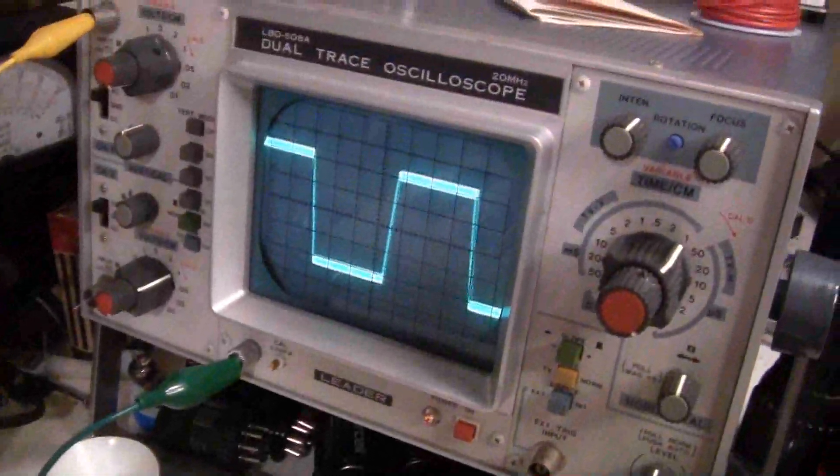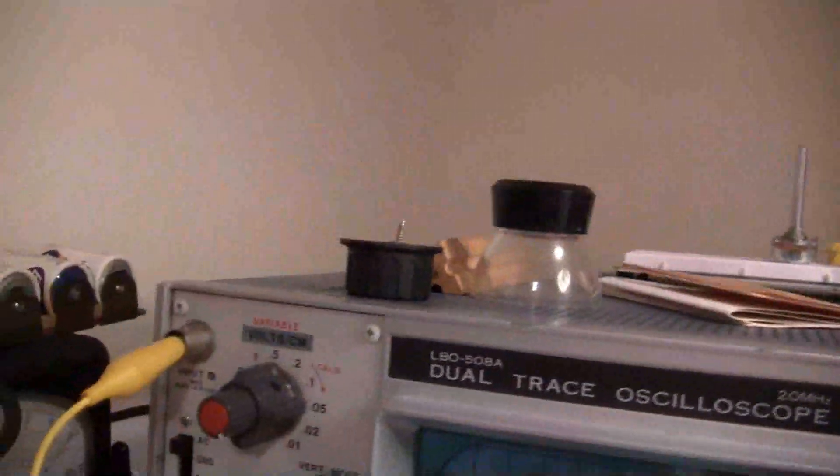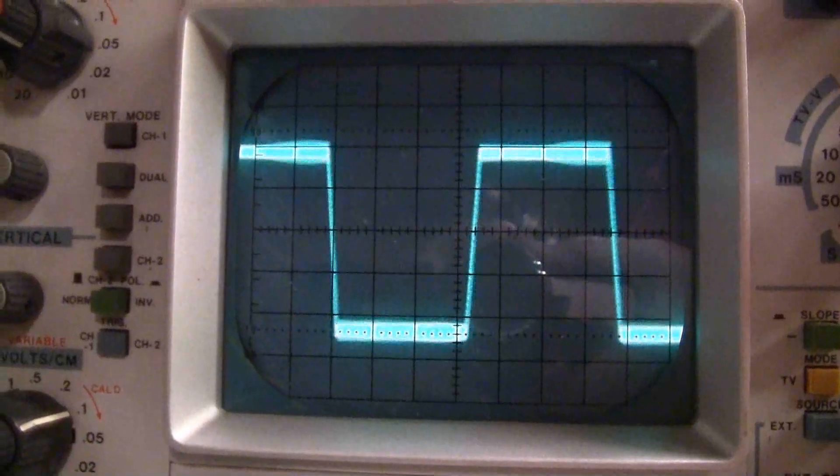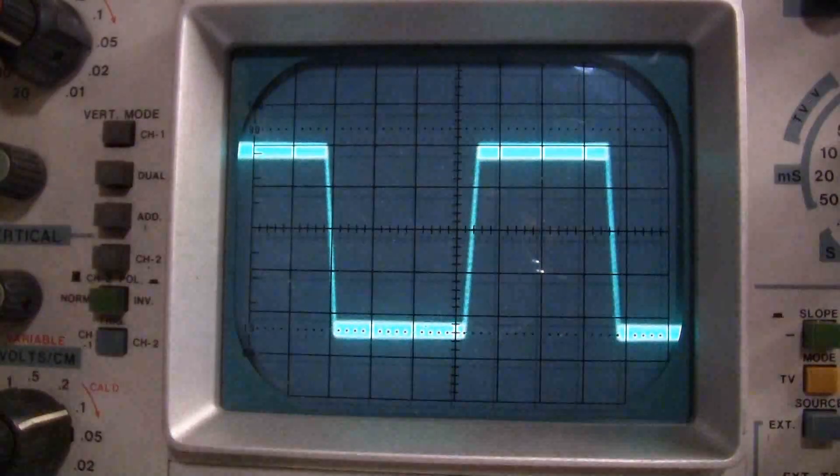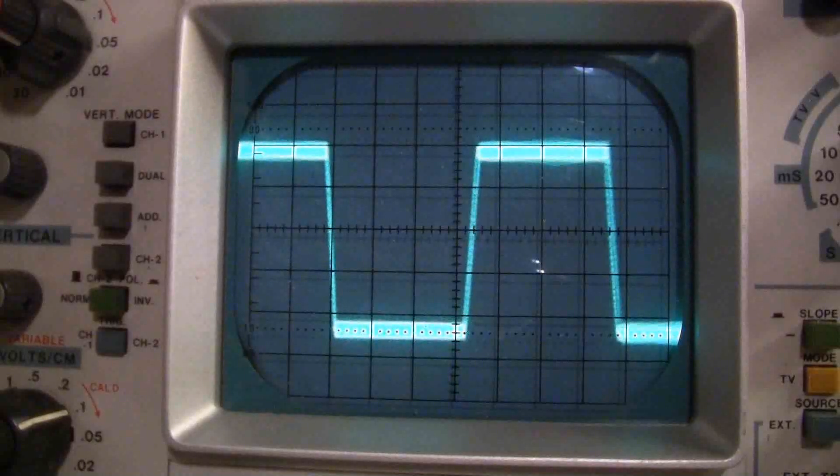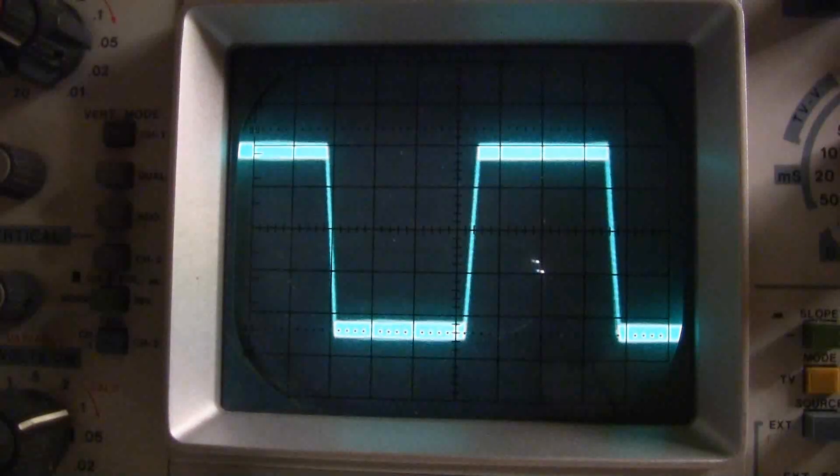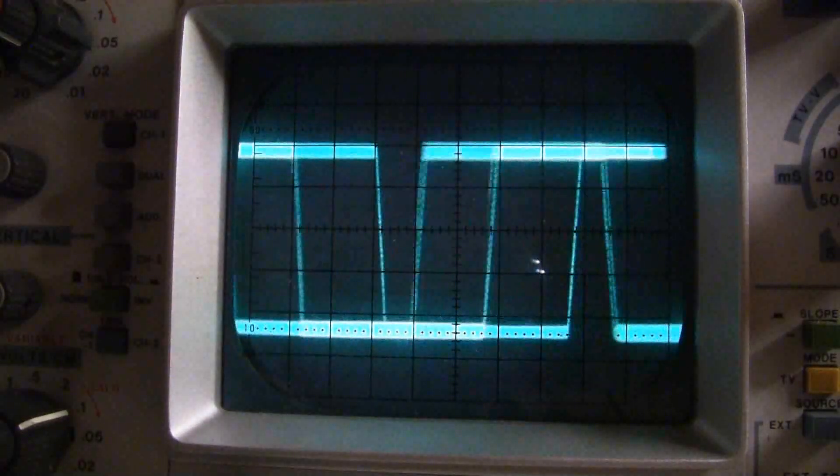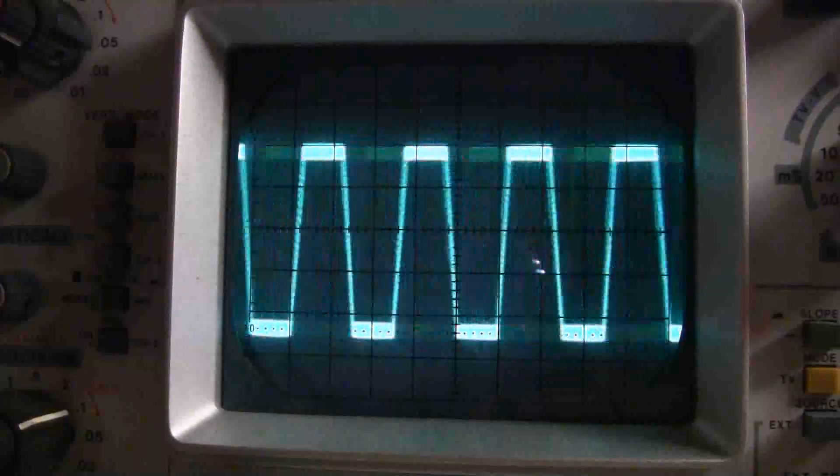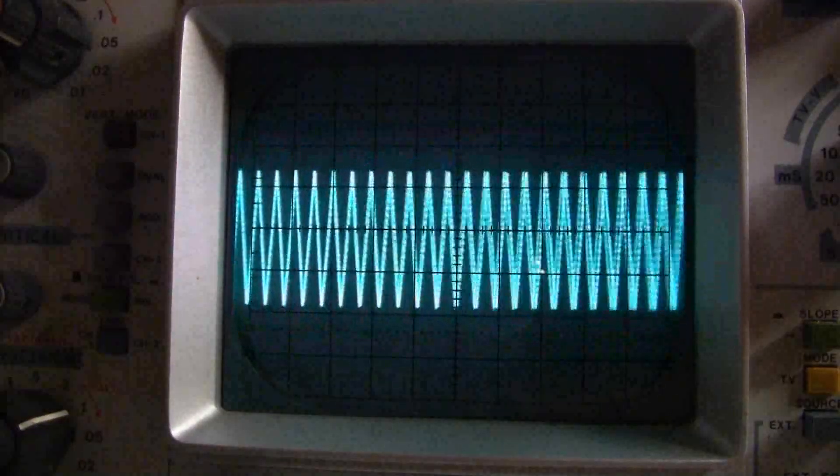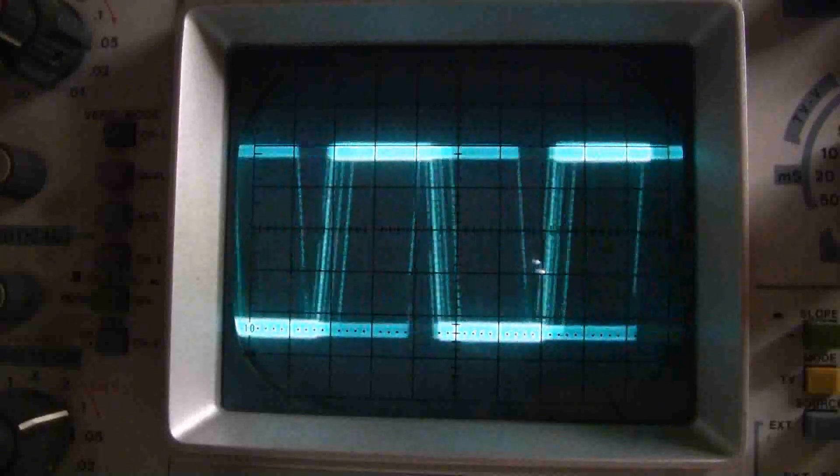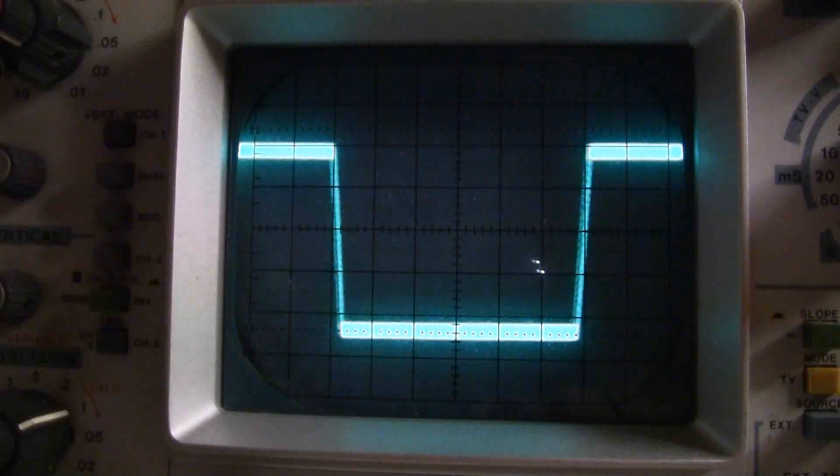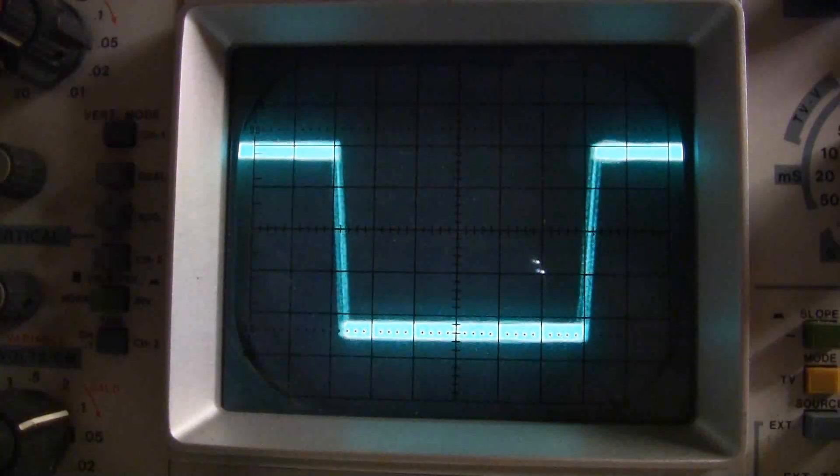There's the scope. I'll set this down and then I'll vary the... turn off the lights here so you can see that better. There we go. Now I'm going to vary the resistor here. There we go. Pretty nice multivibrator.